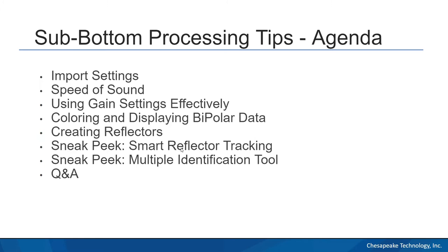Another useful tool we've been working on is a multiple identification tool. When you're tracing sub-bottom data, you sometimes get multiples, harmonics, and ringing in the water column, and it's hard to tell what's real data versus a multiple or harmonic of something you've already seen. We're working on a tool for this — the user interface isn't settled yet, but I'll show you what we've been working with. Then we'll have Q&A.